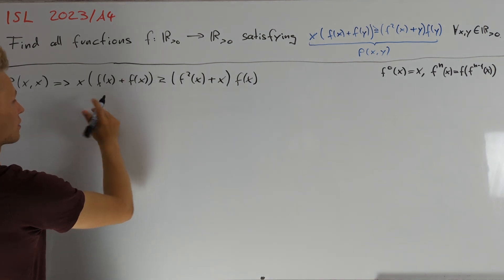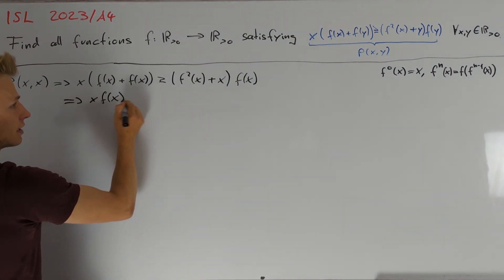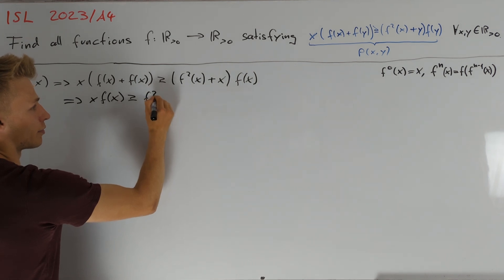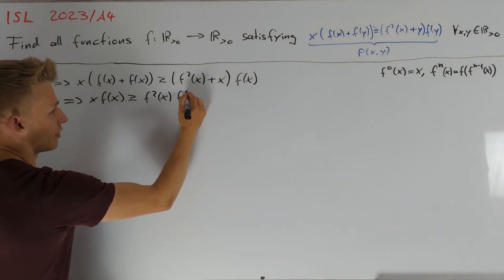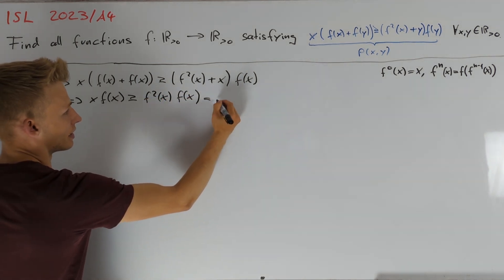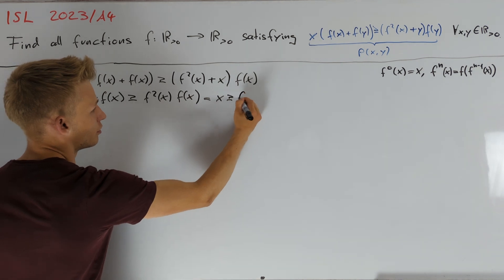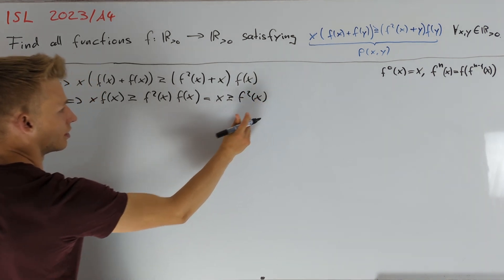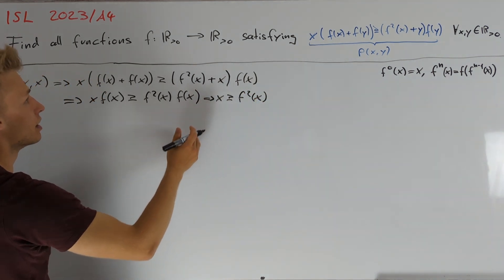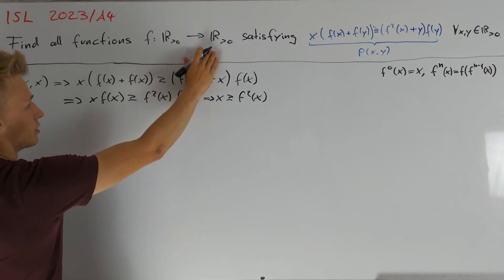Subtracting x times f(x) from both sides yields that x·f(2x) is greater than or equal to f²(2x) times f(x), which implies that x is greater than or equal to f²(x). Note that dividing by f(x) is possible because we are dealing with positive numbers.